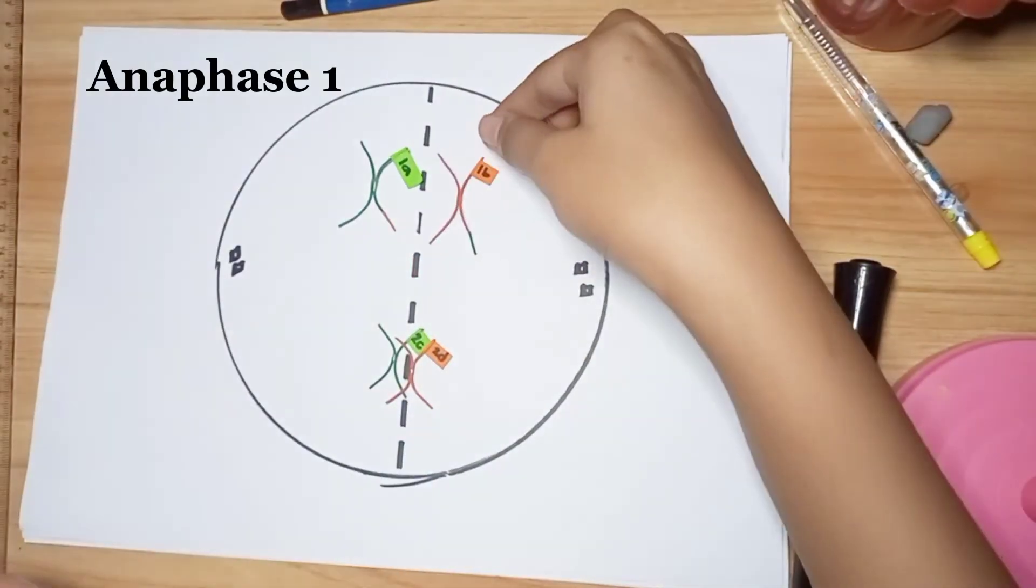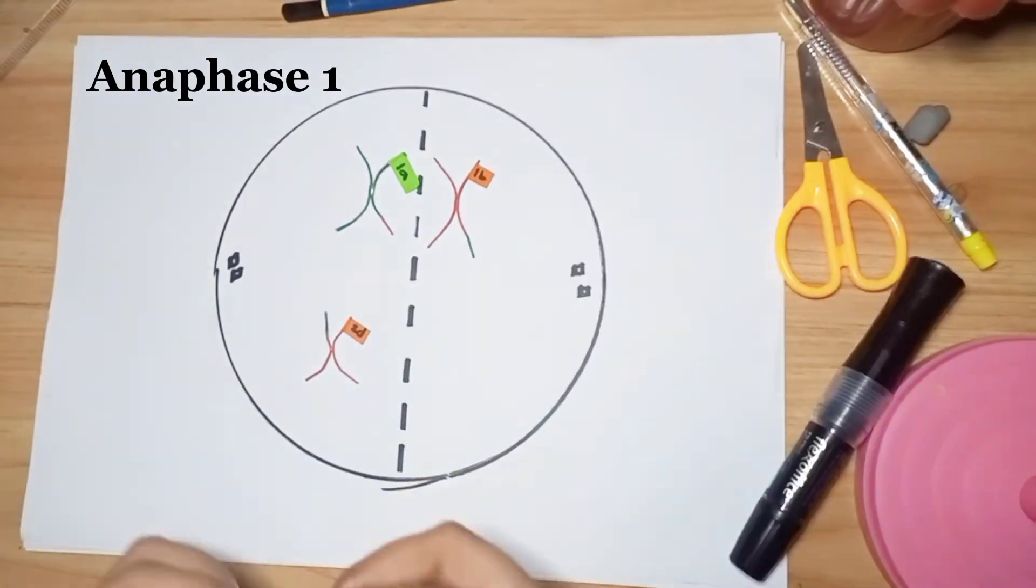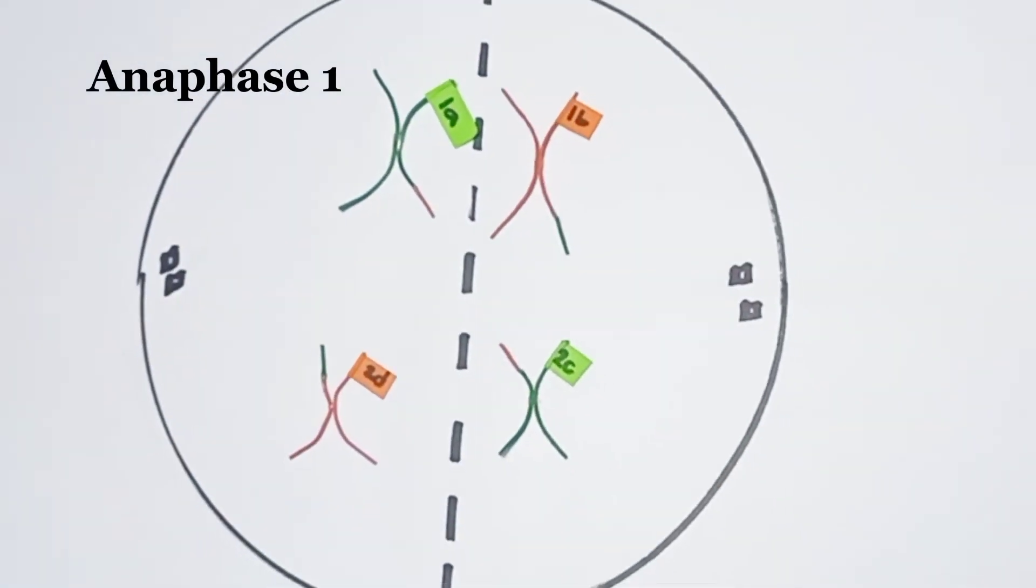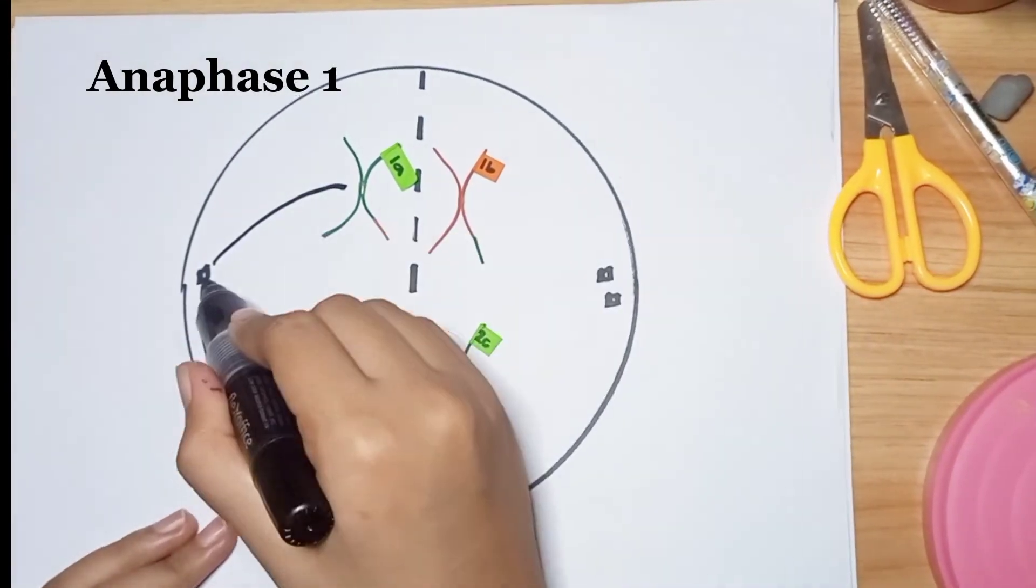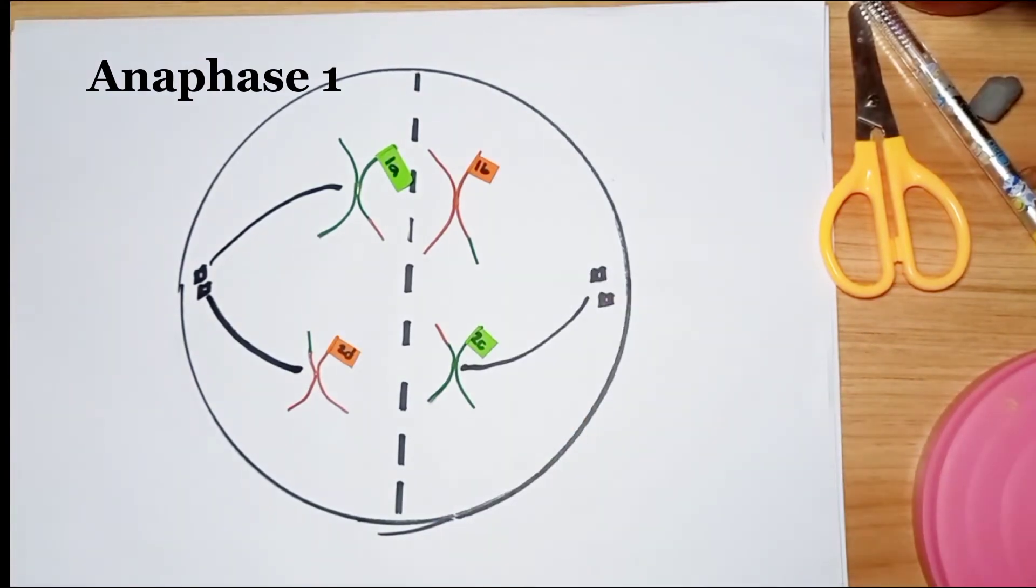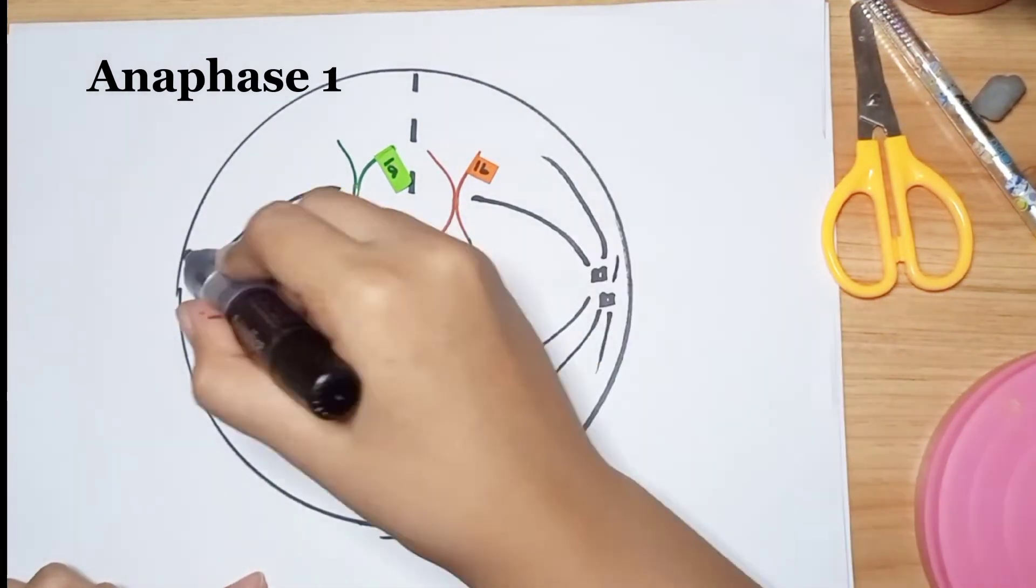In anaphase I, the homologues are pulled apart and move to opposite ends of the cell. The sister chromatids of each chromosome, however, remain attached to one another and don't come apart.